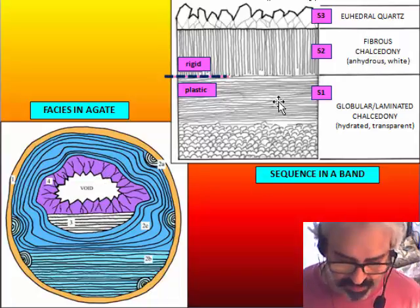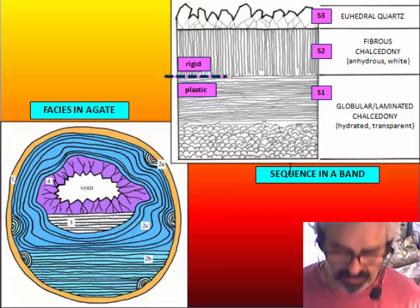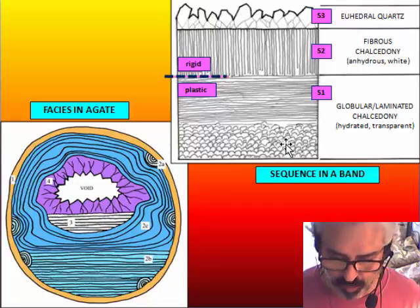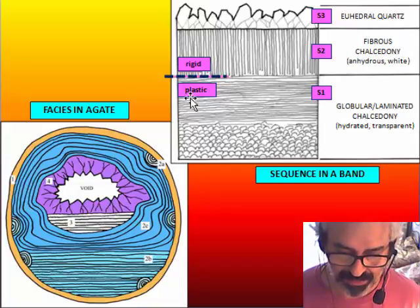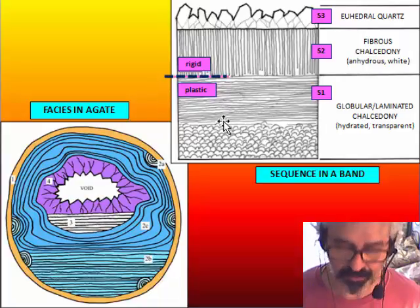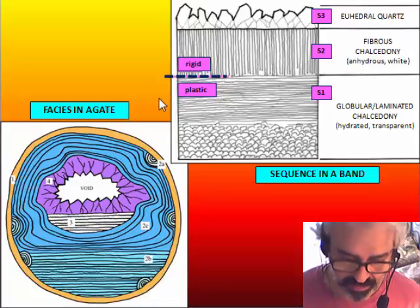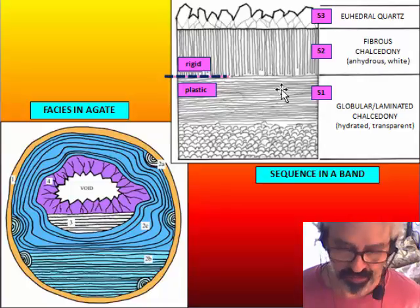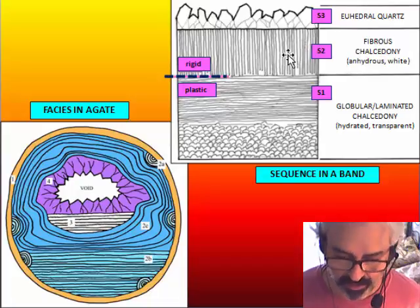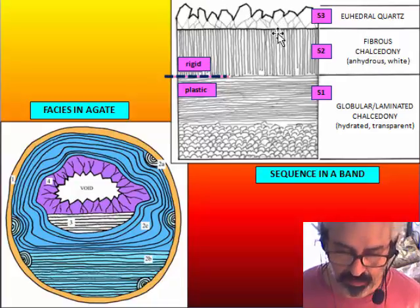We also see that inside the band — facies two — the bands are composed of three different components. One is globular chalcedony that is usually transparent and has most of the color of the agate. This part is plastic when recently formed because it sticks to the cavity wall and is a polymer, so it is like a gel. The other band is composed of fibrous chalcedony that is crystalline, microcrystalline quartz and is rigid. And also normal quartz, which is crystalline.